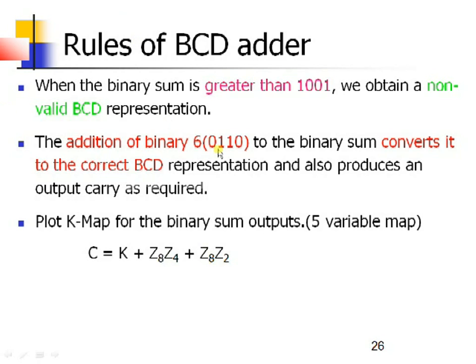The addition of binary 6 to the binary sum converts it to the correct BCD representation and also produces an output carry as required. So in order to get the correct BCD value, we have to add binary 6 to the resultant binary number. For example, assume I have added 5 plus 5 in BCD — I will get the value 1010. If you add binary 6 to that binary 10, then you will get the correct BCD representation.